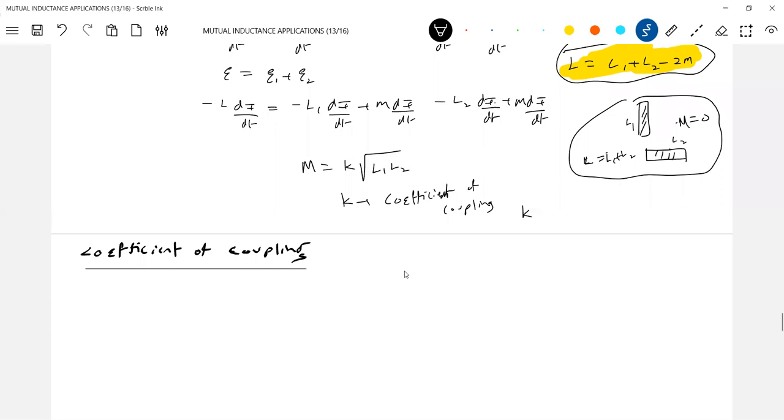The fraction of what is it is defined? The fraction of flux produced by one coil that links the other coil. That's called as a coefficient of coupling. If the flux produced by one coil completely links the other coil, K will be 1. It's a measure of flux linking one coil.